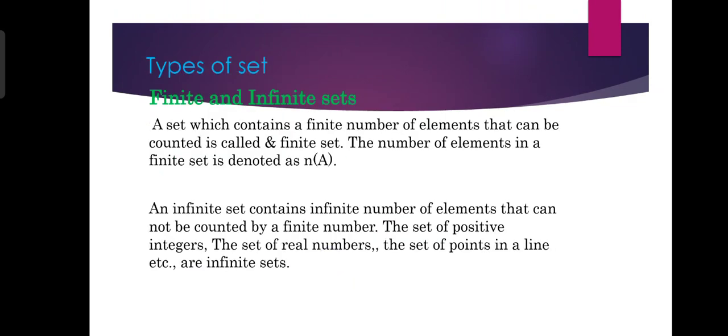The first type is finite and infinite sets. A set which contains a fully finite number of elements that can be counted is called a finite set. The number of elements in a finite set is denoted as n(A) — where n is the number of elements in the set named A.